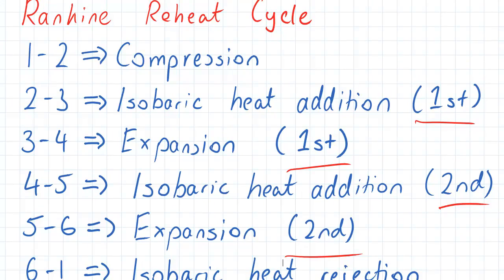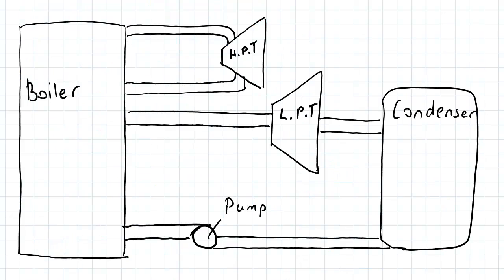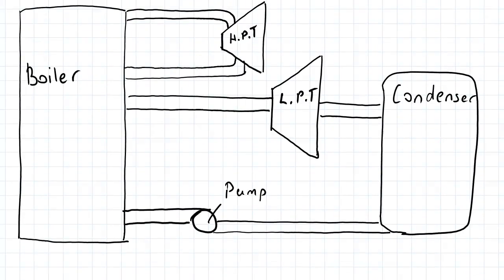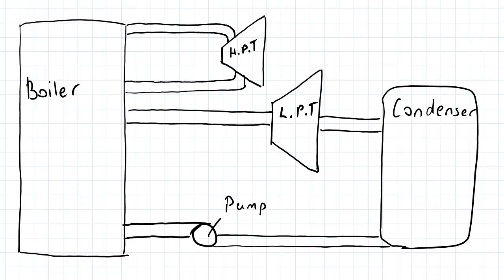So in terms of the machinery involved, we have the following here. We have the boiler, the condenser, the high pressure turbine here, and the low pressure turbine here, and the pump.